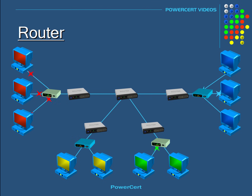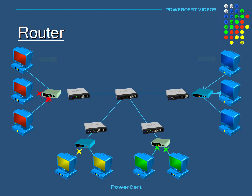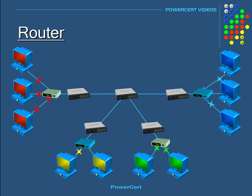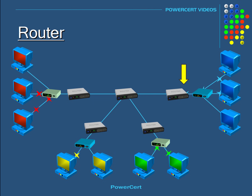Now let's go ahead and exchange data between different networks. Let's say this computer on the red network wants to communicate with the computer on the blue network. For this to happen, the data packet has to leave their own network and go out on the internet. The computer sends their data and it goes to the network's router. Once the data packet reaches the router, the router will look at the IP address of the data packet and forward the data out on the internet to the next router, then make its way to the blue network's router, and then to the intended destination computer. That's how routers work.